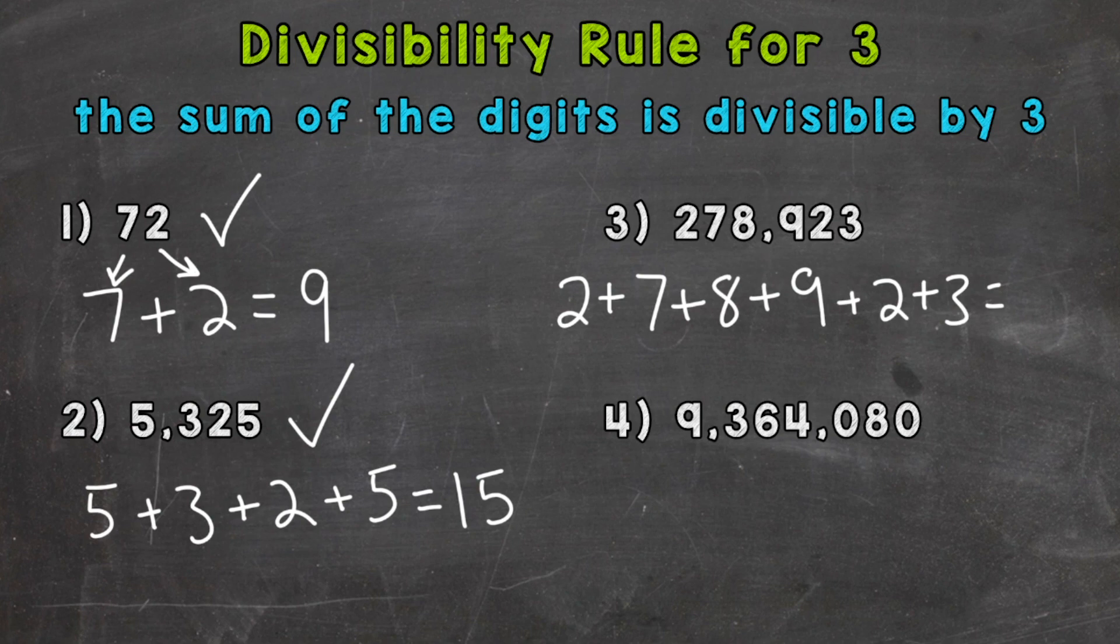So that gives us 2 plus 7 is 9, plus 8 is 17, plus 9 is 26, plus 2 is 28, plus 3 is 31. Now 31 is not divisible by 3. We get a remainder with that answer.